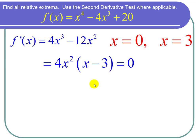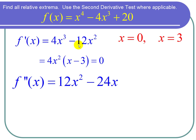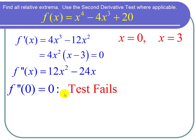Now let's classify them. Let's try the second derivative test, which means I take the second derivative of f, which is 12x squared minus 24x, and I plug in my value to see if I get a positive number, a negative number, or zero. If I plug in zero, I end up getting zero. Unfortunately, the second derivative test fails when I get zero.